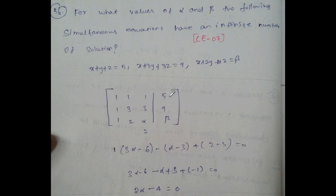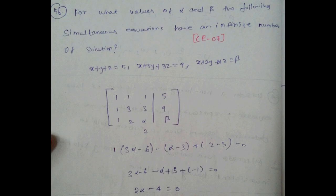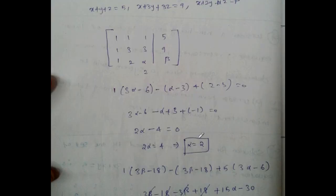Set the augmented matrix: [1, 1, 1 | 5], [1, 3, 3 | 9], [1, 2, alpha | beta]. For the 3x3 coefficient matrix, calculate the determinant: negate the relevant row and column, cross multiply. Then: 3 alpha minus 6 minus alpha minus 3 plus 2 times (minus 3) equal to 0.